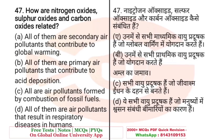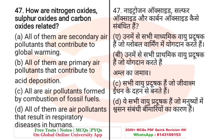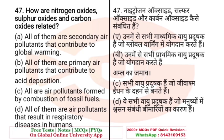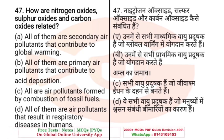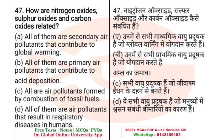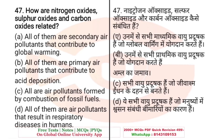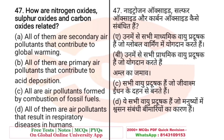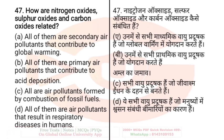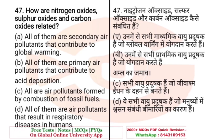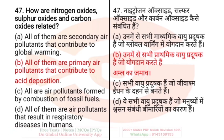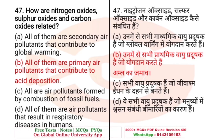Question: How are nitrogen oxides, sulfur oxides, and carbon oxides related? A. All are secondary air pollutants that contribute to global warming; B. All are primary air pollutants that contribute to acid deposition; C. All are air pollutants formed by combustion of fossil fuels; D. All are air pollutants that result in respiratory disease in humans. The right answer is B — all of them are primary air pollutants that contribute to acid deposition.